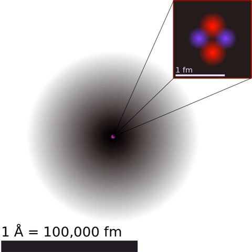Under most definitions, the radii of isolated neutral atoms range between 30 and 300 pm, or between 0.3 and 3 angstroms. Therefore, the radius of an atom is more than 10,000 times the radius of its nucleus, and less than 1/1,000th of the wavelength of visible light. For many purposes, atoms can be modeled as spheres.